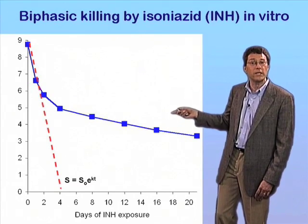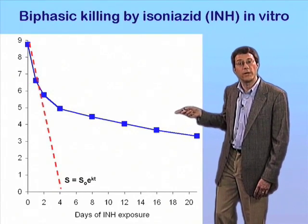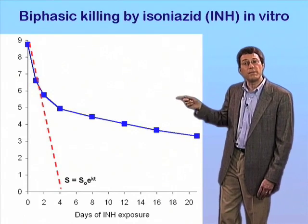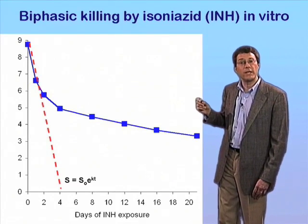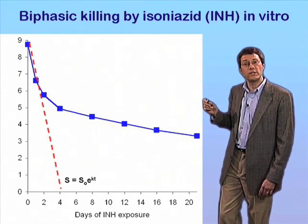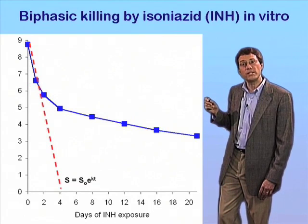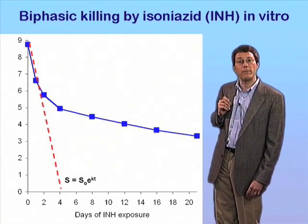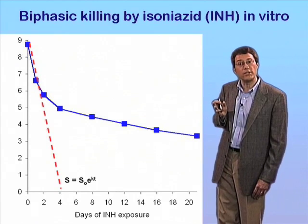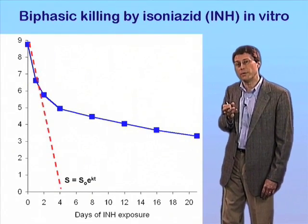The kinetics of killing are quite different in vitro as compared to in vivo, but the biphasic shape of the kill curve in vitro is essentially the same as what we see in vivo, suggesting that the persister phenomenon, although it may be modulated by the tissue environment, is perhaps not absolutely dependent on the tissue environment.